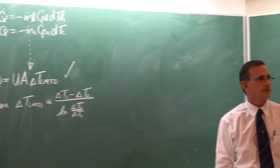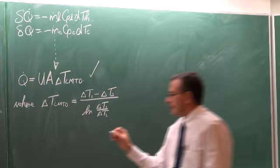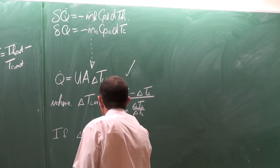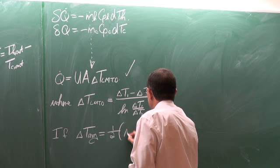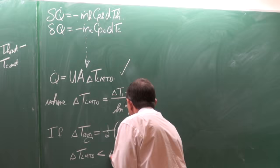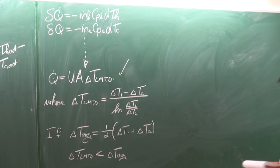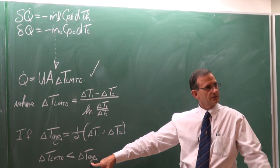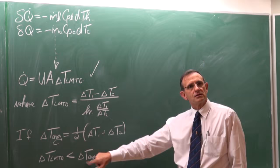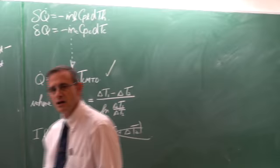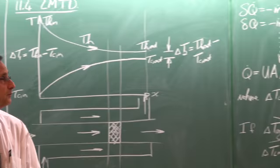This is the correct way of using the LMTD. If you instead used the arithmetic average — half times (delta T1 plus delta T2) — you can show mathematically that delta T_m will always be smaller than delta T_average. That means using the arithmetic average will overestimate the heat transfer rate, which is why it is dangerous. Do not do that; it is not sufficiently accurate.